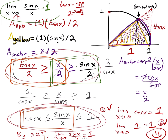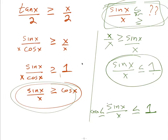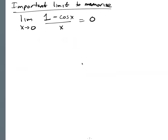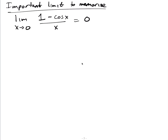There's a second important trig limit to memorize: the limit as x approaches 0 of (1 minus cosine x) over x equals 0. Note: this can be written as 1 minus cosine x or cosine x minus 1 in the numerator — same thing. You can derive it using similar methods.